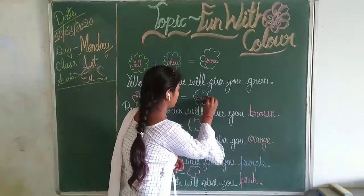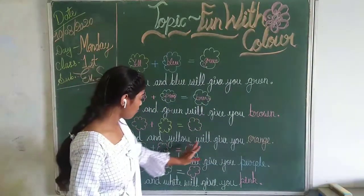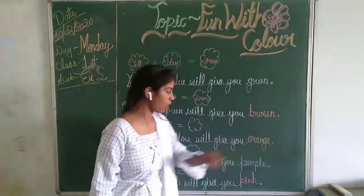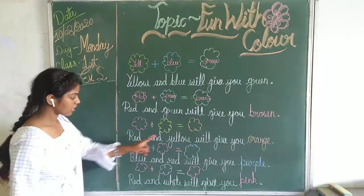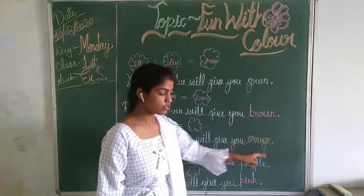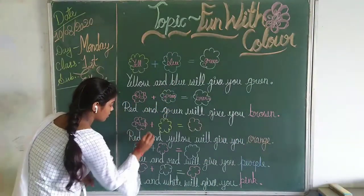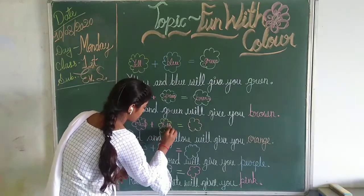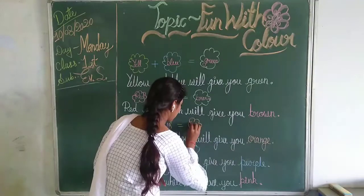And red and yellow will give you which color? Orange color. When we add red color to yellow color, it will give you orange color. Red and yellow will give you orange color.